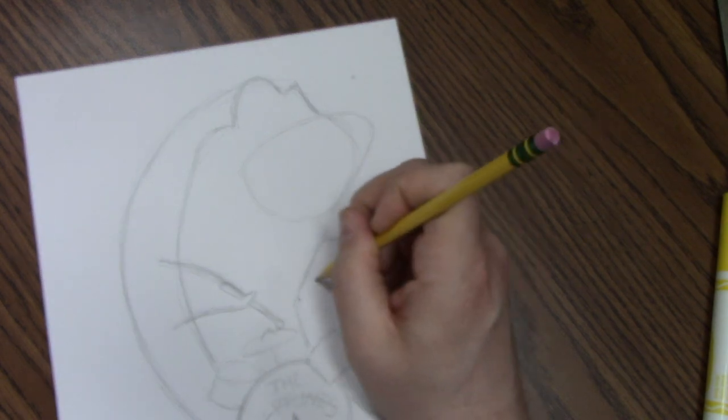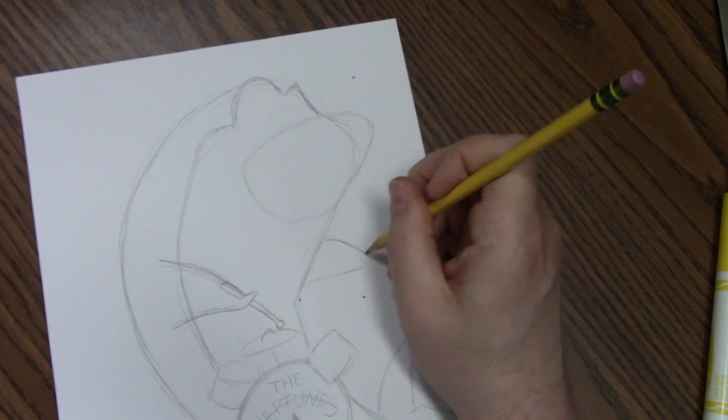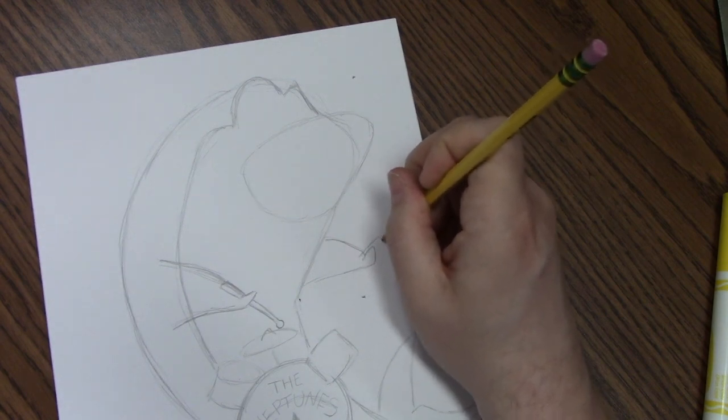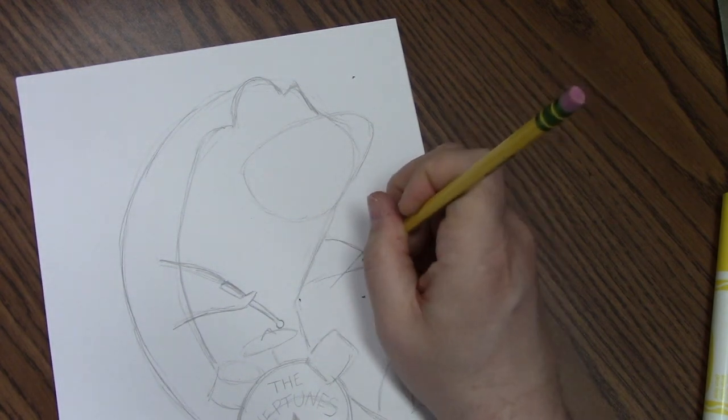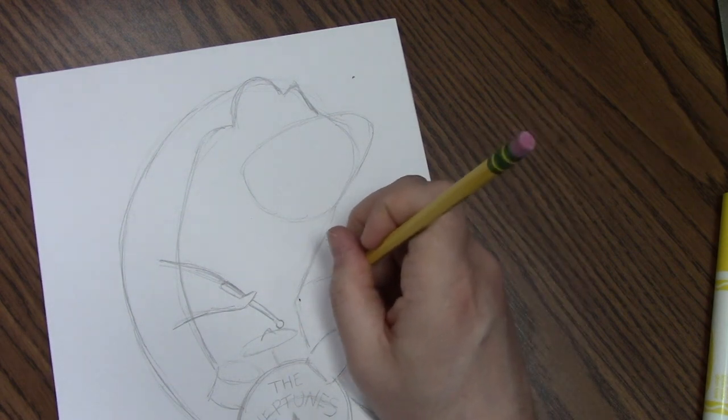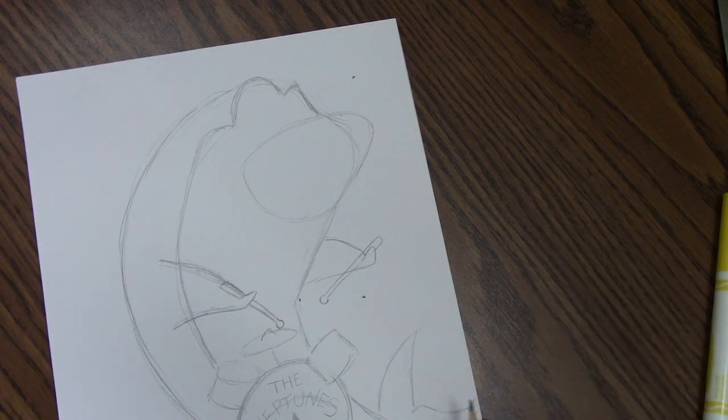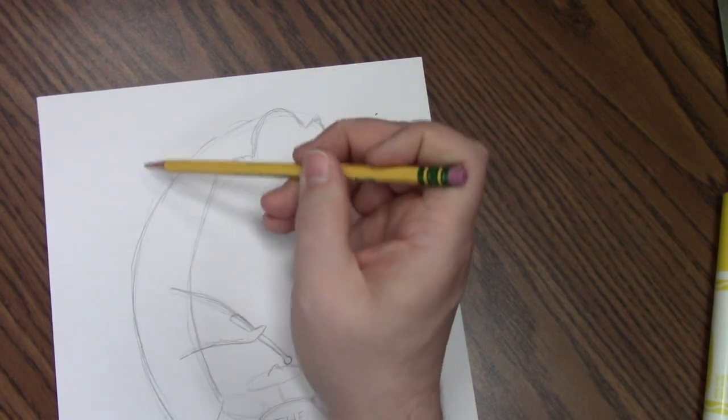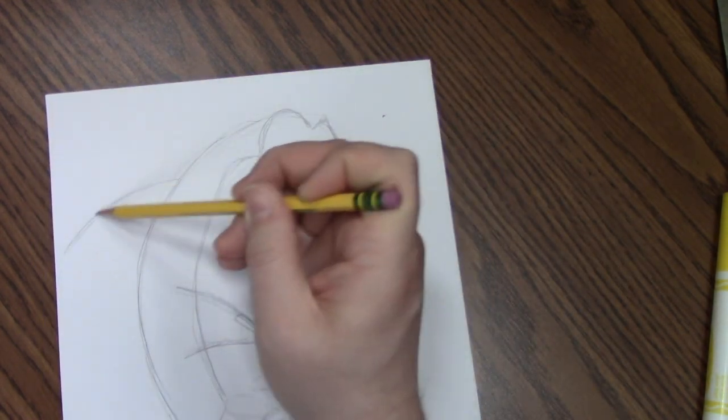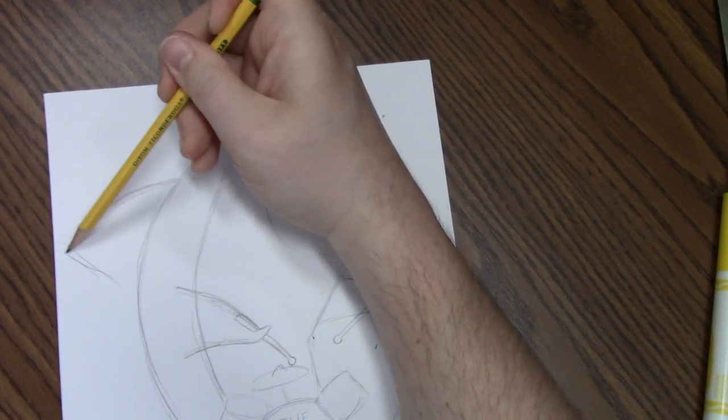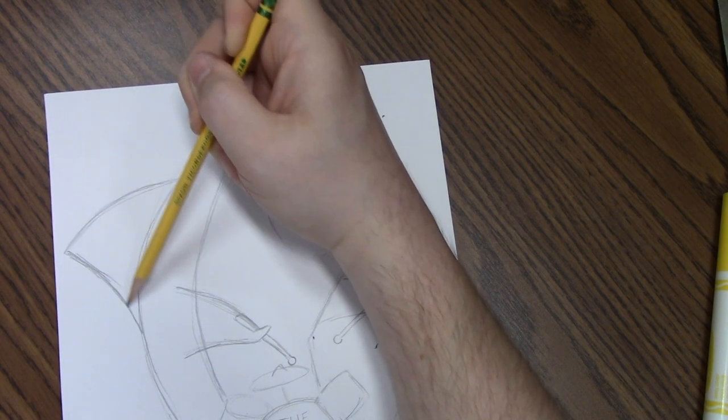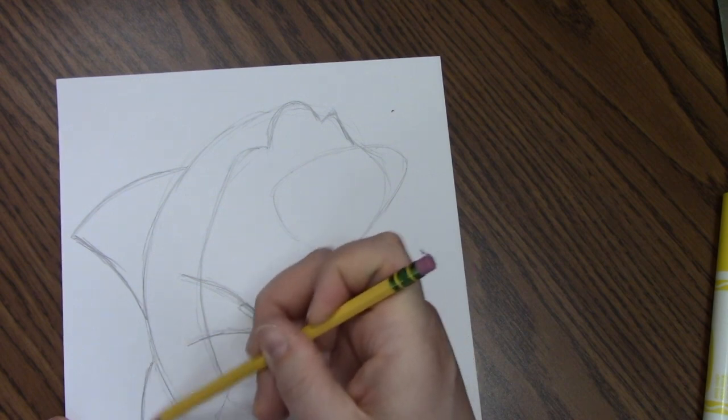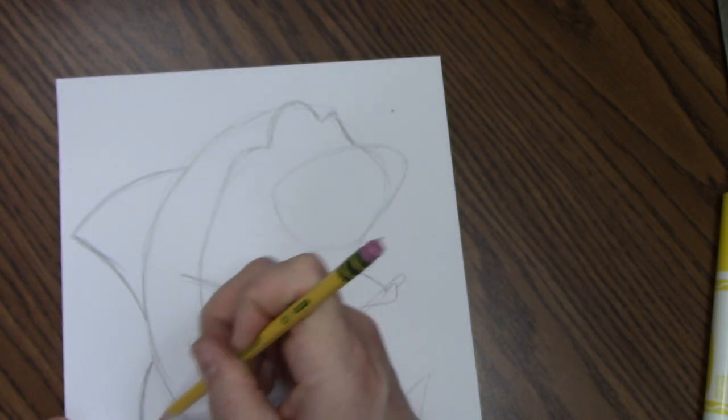And then there's going to be one fin coming off this way. And then this drumstick is going to come down this way. Okay. Let's do his big shark fin, which is going to go off this way. All right, so there's one shark fin, and then there's a smaller fin here.